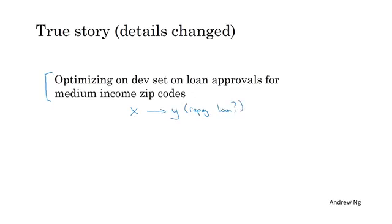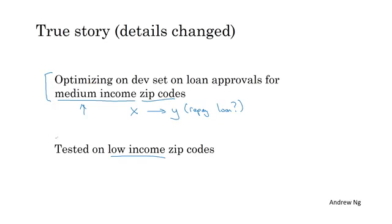The dev sets came from loan applications from medium income zip codes. Zip codes is what we call postal codes in the United States. But after working on this for a few months, the team then suddenly decided to test this on data from low income zip codes. And of course, the distribution of data from medium income and low income zip codes is very different. And the classifier that they spent so much time optimizing in the former case just didn't work well at all on the latter case. This particular team actually wasted about three months of time and had to go back and really redo a lot of work.